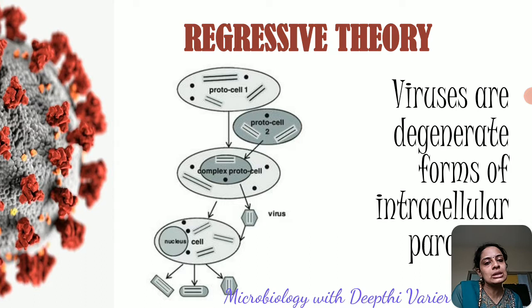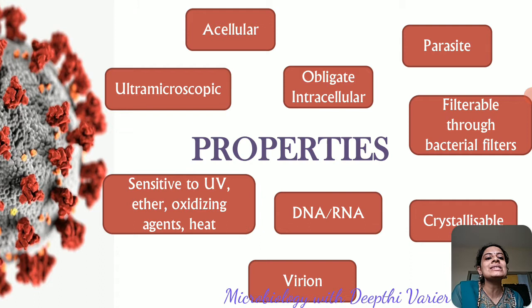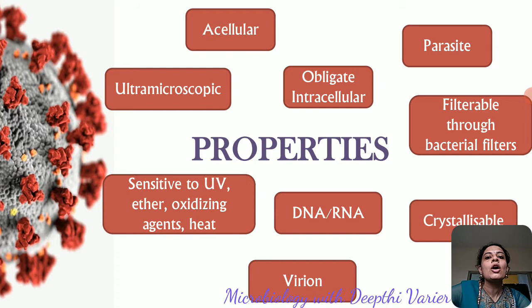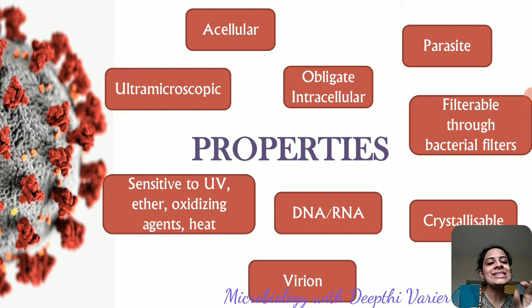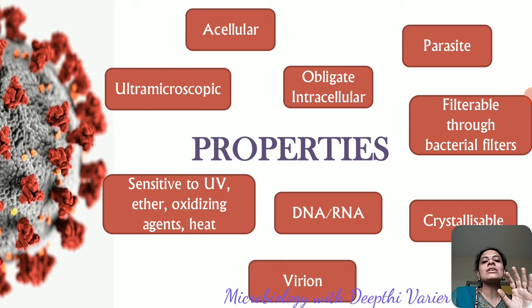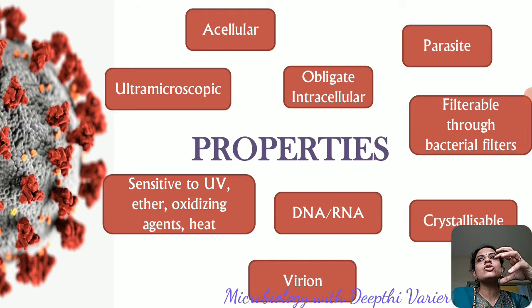Now let us look at the properties of a virus. For any particle to be called a virus, it must conform to these properties. First, viruses are acellular obligate intracellular parasites. Acellular means they have no cell-like organization — they are made up only of a protein coat and a piece of nucleic acid inside it, with no cell wall, cell membrane, or any cellular components. They cannot multiply independently, which is why we call them acellular.